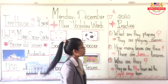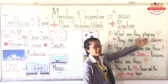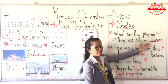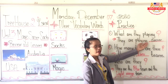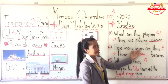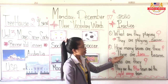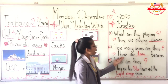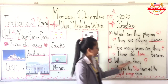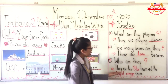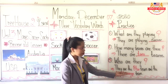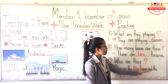It's time for you to practice with the teacher again. What are they playing? They are playing soccer. Number 2: how many teams are there? There are 2 teams. The next question: who are they? They are the blue team and the light orange team.